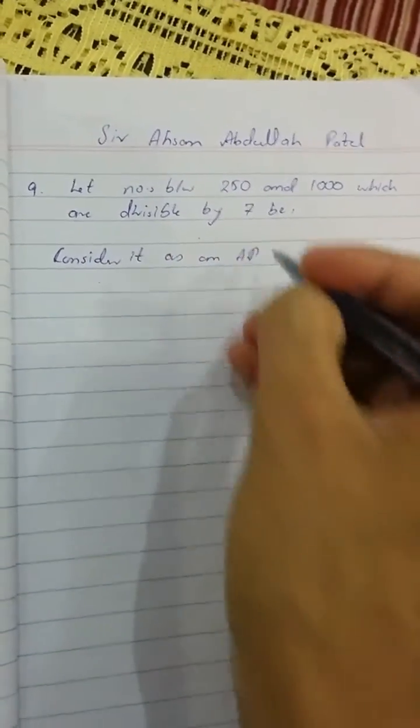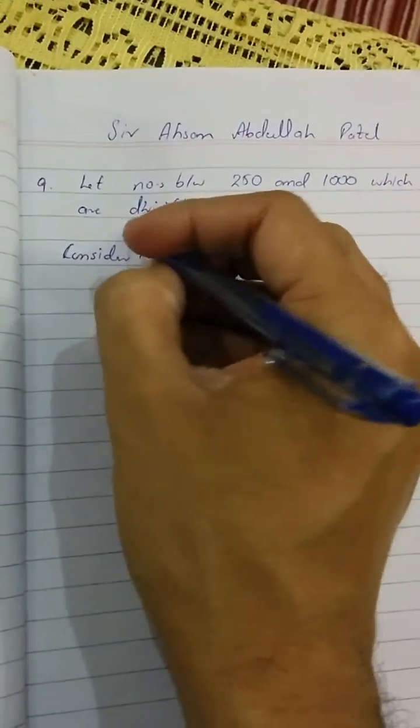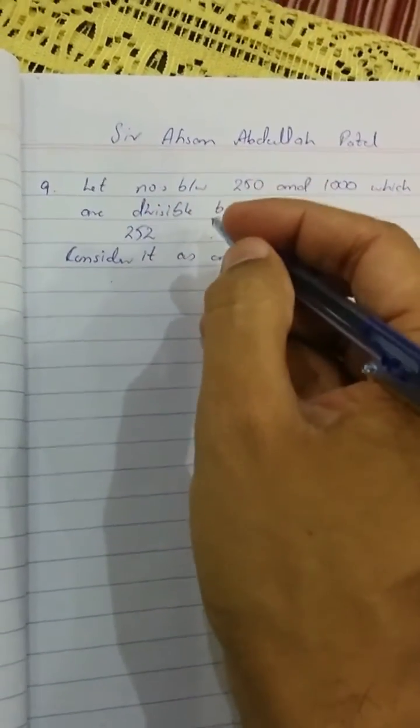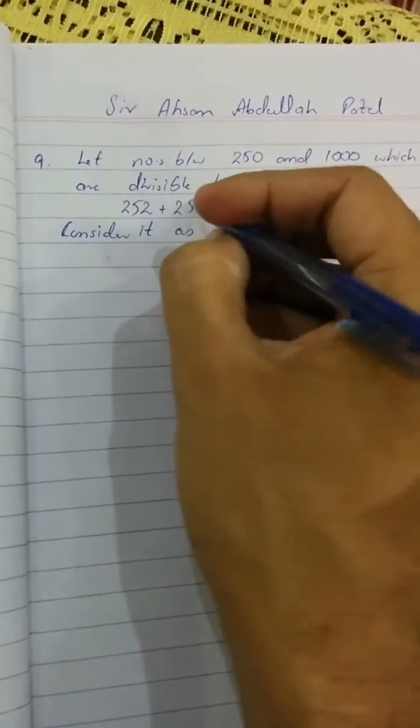So which numbers will these be? 252. We'll check by dividing by 7 using calculator. Then 259.